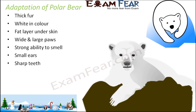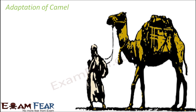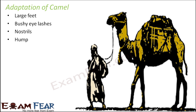Polar bears have sharp teeth which help them eat other animals. The camel's adaptations are very different — camels have large, padded feet that help them walk over sand, and bushy eyelashes that prevent sand from entering their eyes, since they live in desert areas where sand keeps flying around.